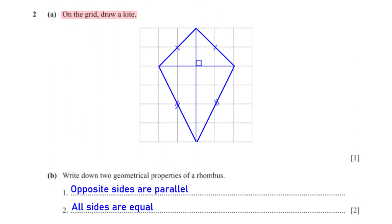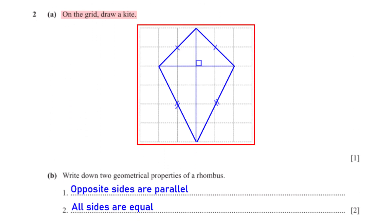On the grid, draw a kite. To draw the kite, we need to ensure that these two lines are equal and these two lines are also equal. We also need to ensure that the diagonals are perpendicular.